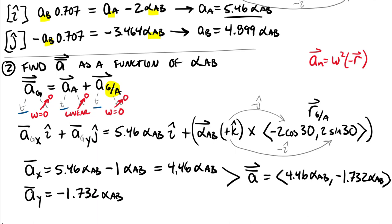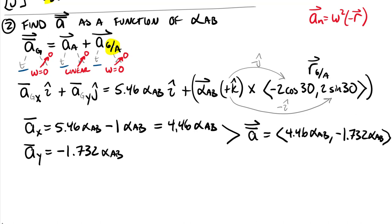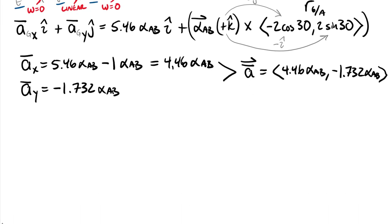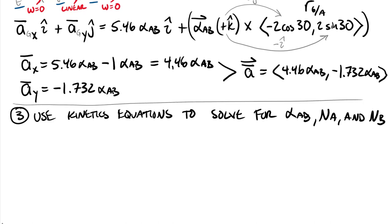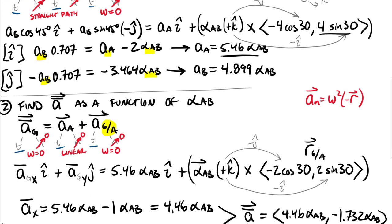We now have our linear acceleration of the centroid as a function of angular acceleration alpha. We're ready for the last big push — taking this information and putting it into our kinetics equations: F equals ma and M equals I alpha. We'll use these kinetics equations to solve for alpha AB, NA, and NB. Starting with the moment equation, summing moments about the centroid using I-bar — mass moment of inertia about the centroid — times angular acceleration alpha.